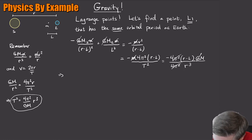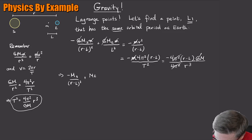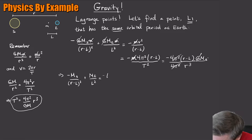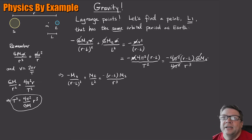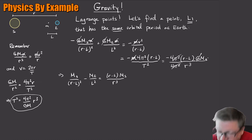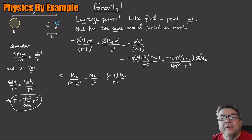After cancellation, we have: minus M_S over (R − l)² plus M_E over l² equals minus (R − l) M_S over R³. Multiplying through by negative one to clean it up, we get: M_S over (R − l)² minus M_E over l² equals (R − l) M_S over R³. Now I'm going to use the binomial approximation.